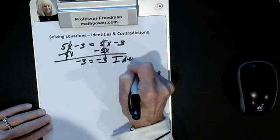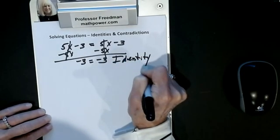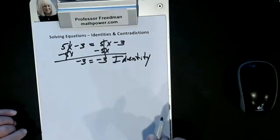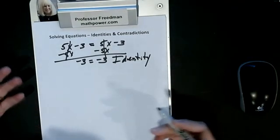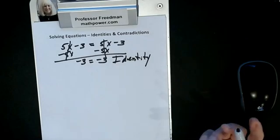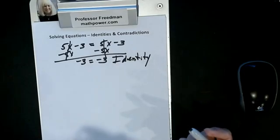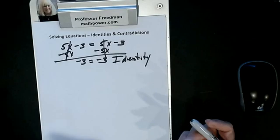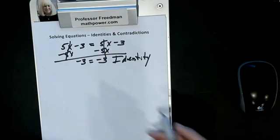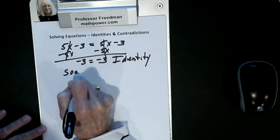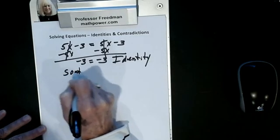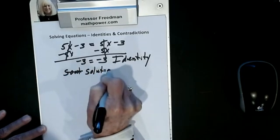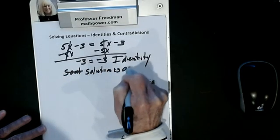This is called an identity. When I have negative 3 equals negative 3, that's a true statement, which means x can be anything — x could be negative 2, 25, or negative 150. Because x can be anything, the solution is all real numbers.